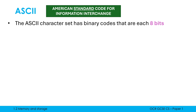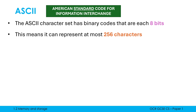This character set has binary codes that are each eight bits, so for every character it has a unique eight-bit binary code — in other words, each character code is one byte. This means it can represent at most 256 characters. That number comes from the number of combinations: in eight bits I can have 256 unique combinations, and mathematically we get this by doing two to the power of eight. Two to the power eight is 256.